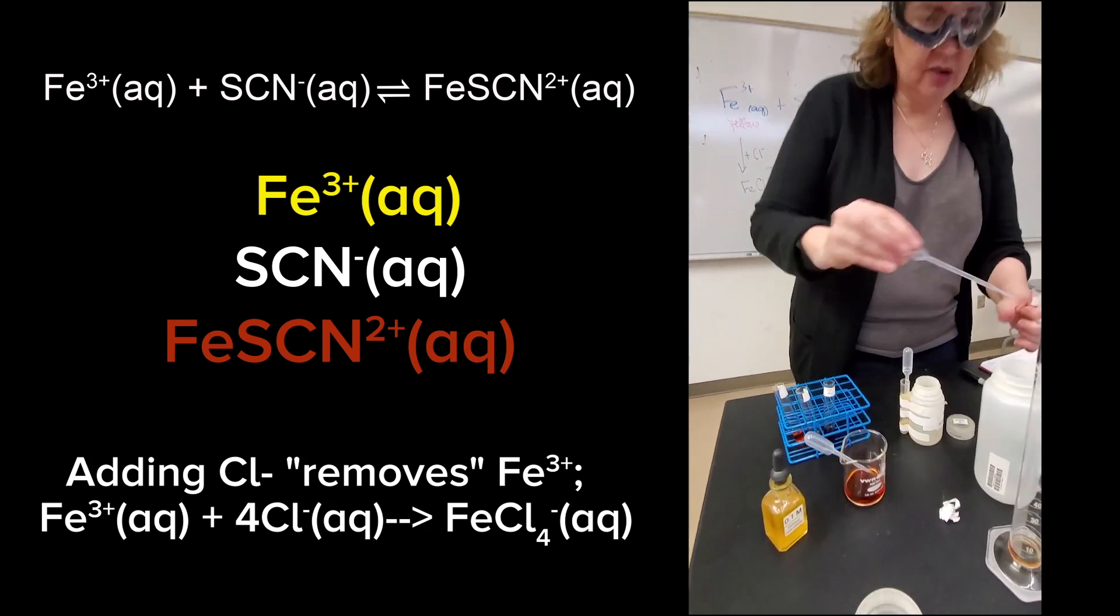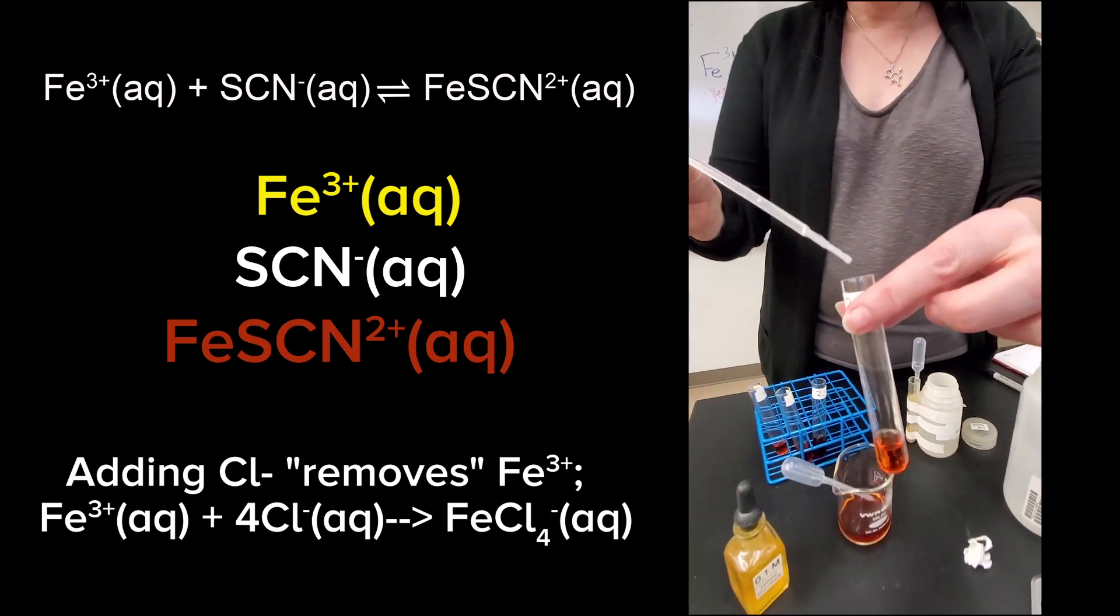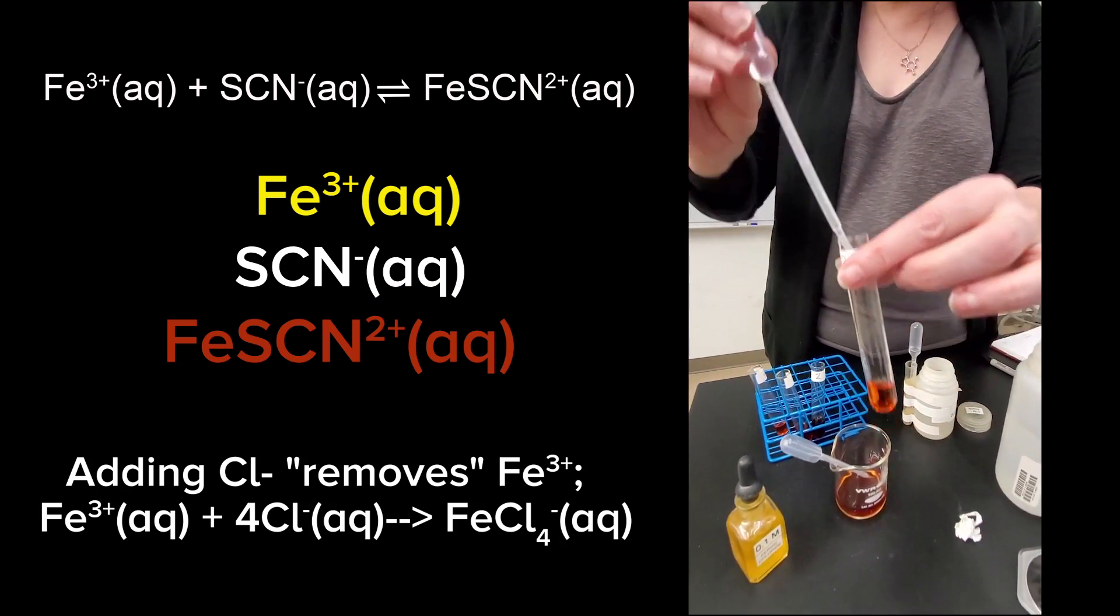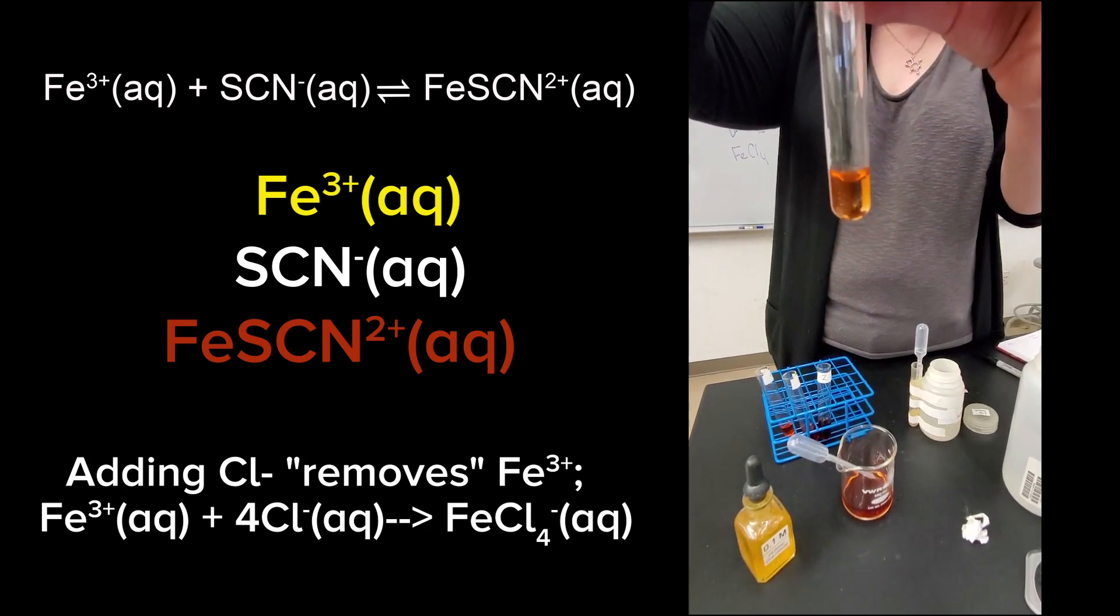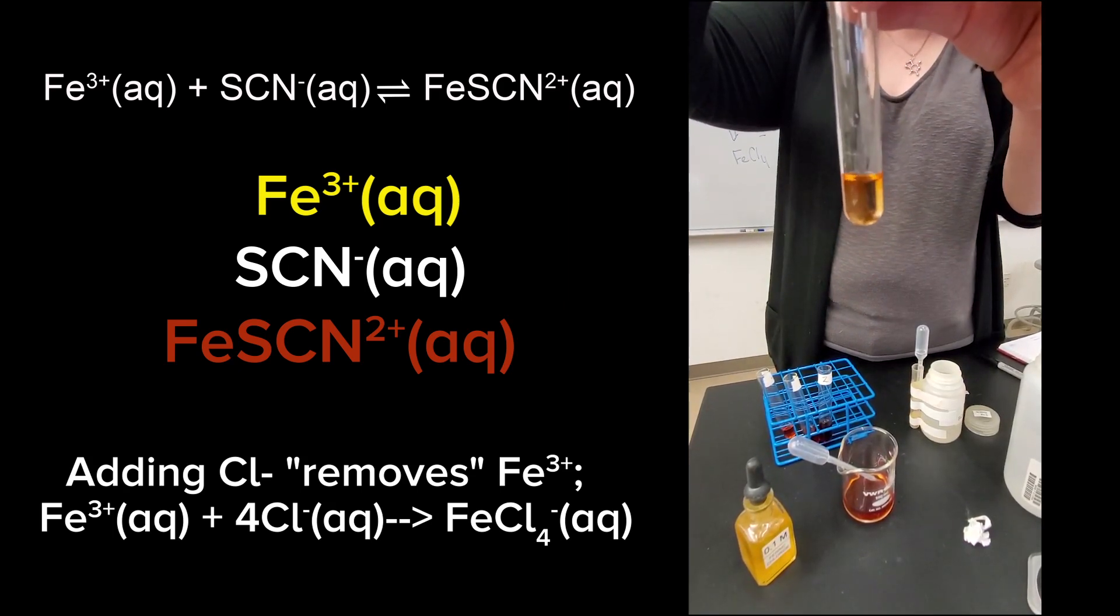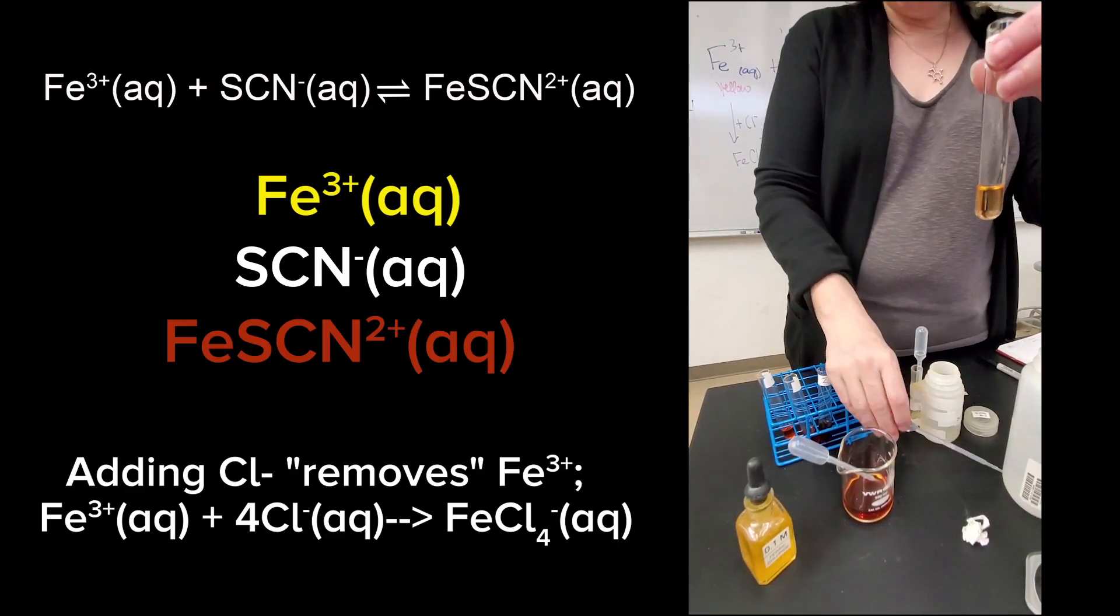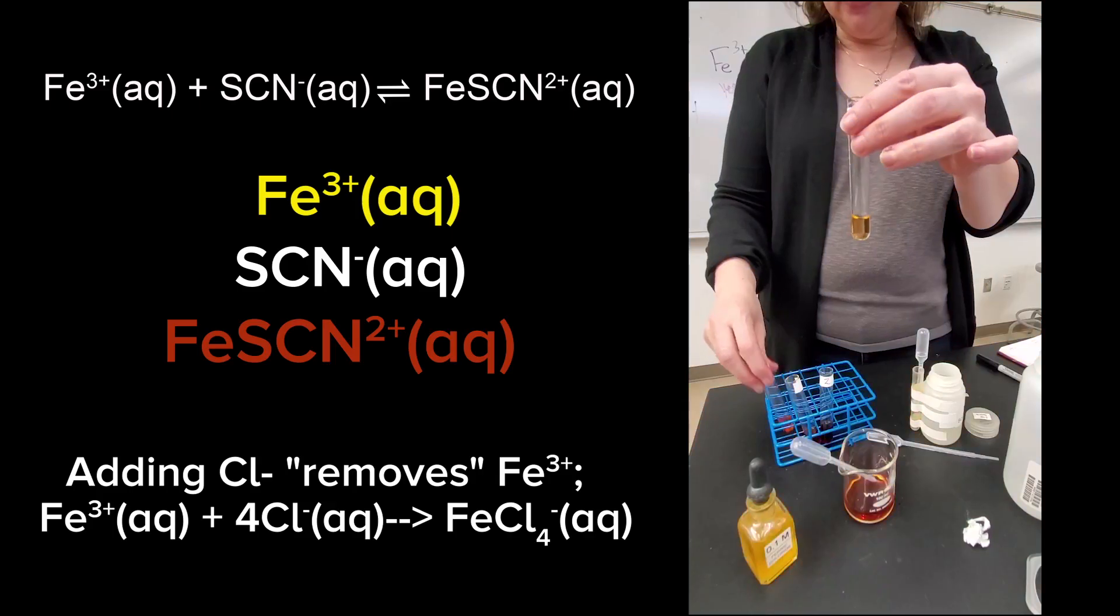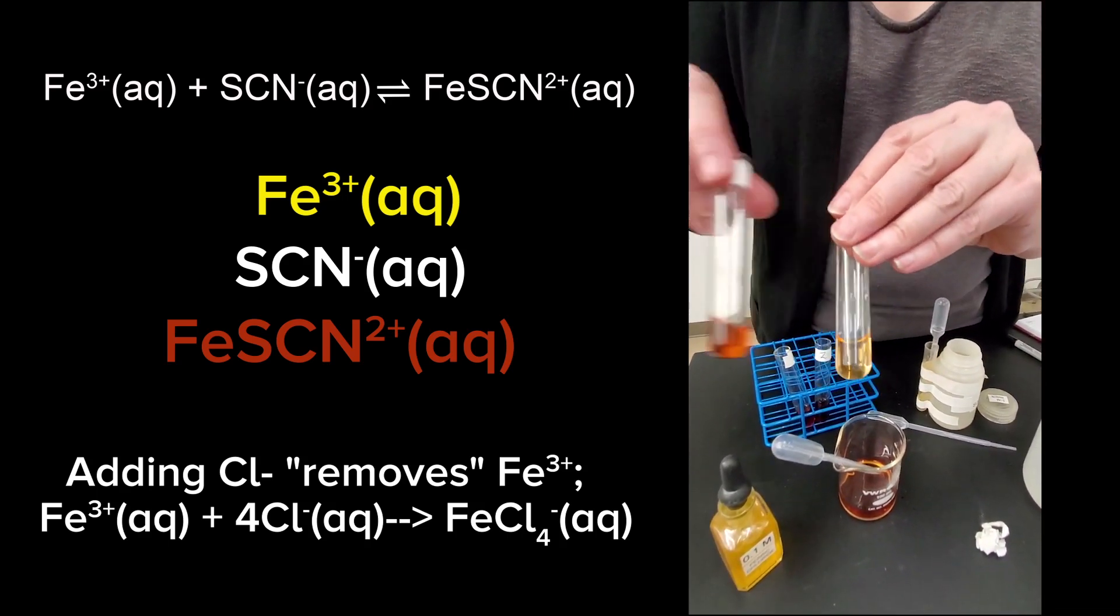So here we go. Here is my final test tube. Here's my saturated sodium chloride. I'm going to add, how much does it want me to do? Well, let's just add it until we see. A bunch of drops. One, two, three, four, five, six, seven, eight, nine. Okay. So there's my sodium chloride. And as we look, this was my control. There's way less of that orange red color.